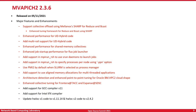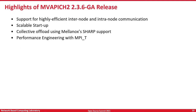This is the latest release made a few months back — MVAPICH2 2.3.6. It has a lot of features; you can get more details from our website. Let me highlight some of the 2.3.x GA release features, especially for intra-node/inter-node communication, startup, collective offload, and also very nice features of performance engineering with MPI.